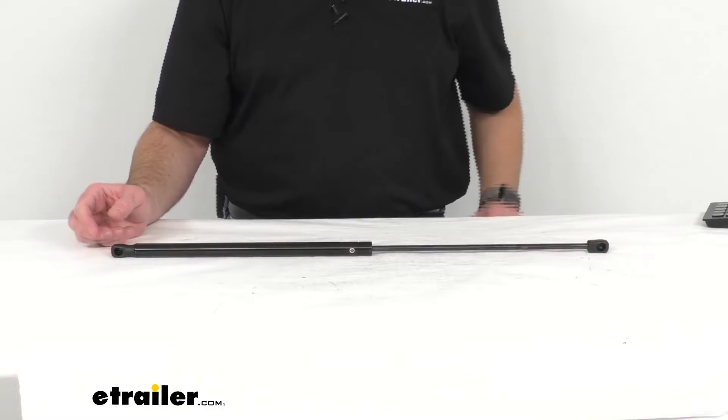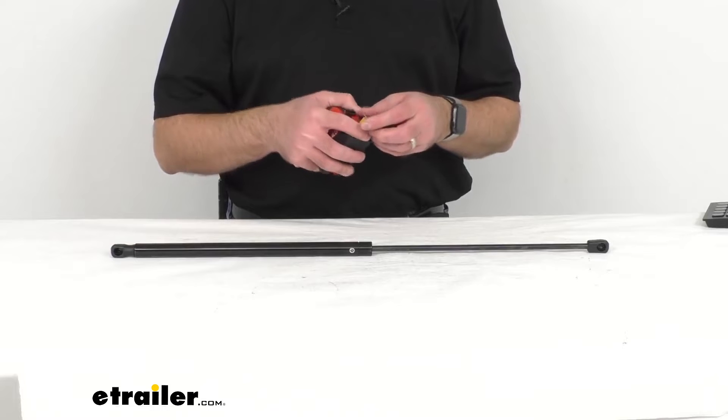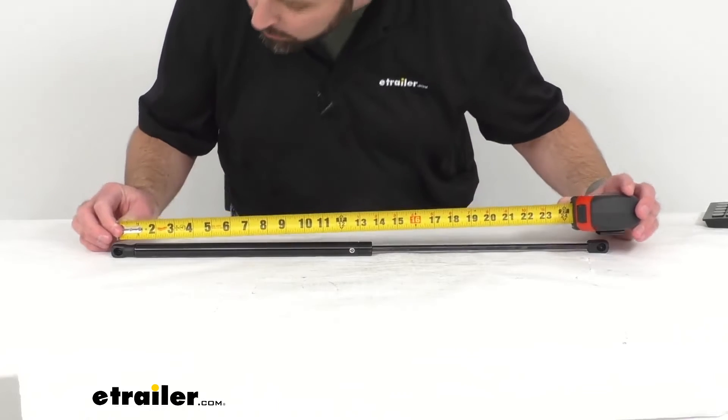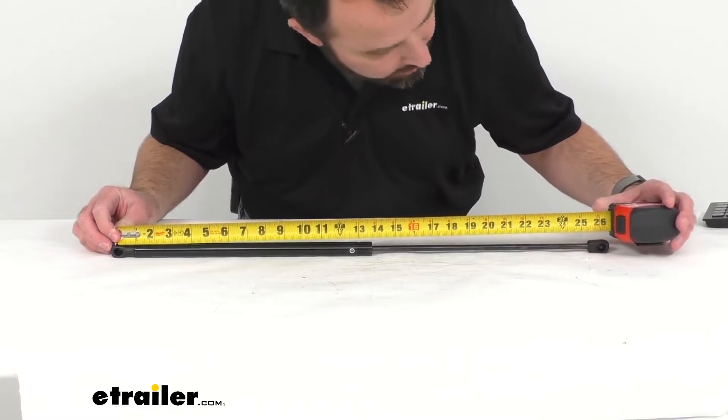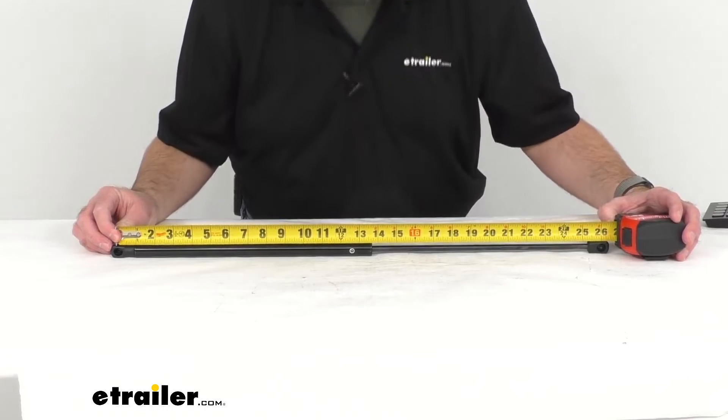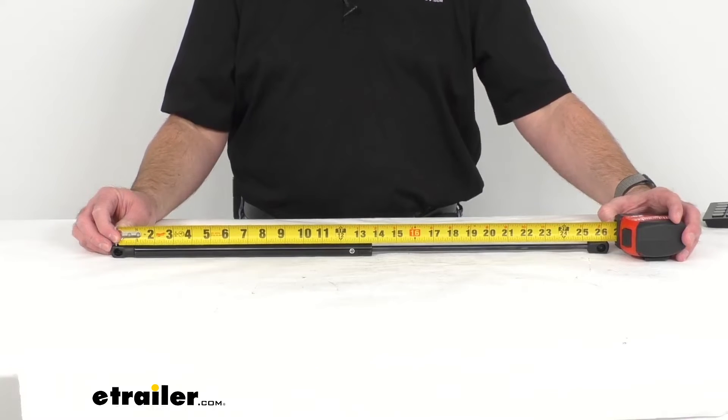Now you are going to get one lift support and the connection type is 10 millimeter ball socket. Let me give you a quick measurement here of the extended length. I'm going to measure from center of socket to center of socket. We are almost at 26 inches. We're going to call it 25 and 15 sixteenths inches, almost 26. That's the extended length.